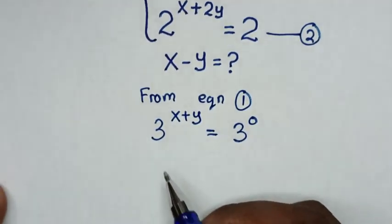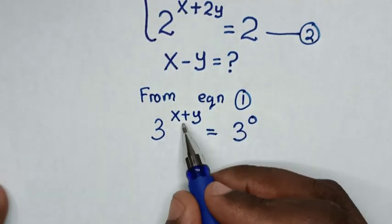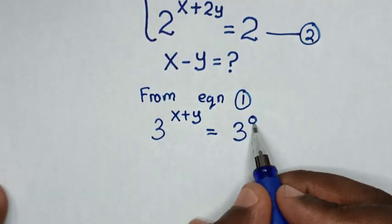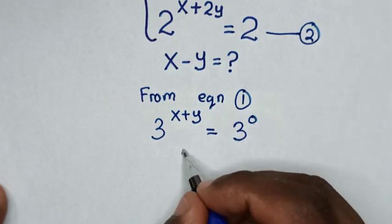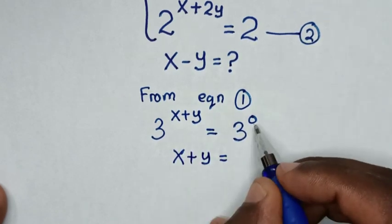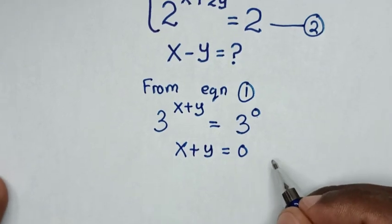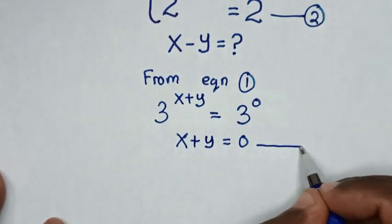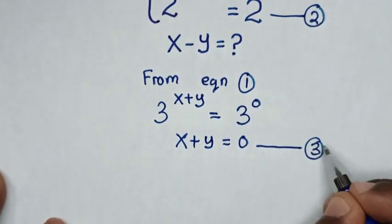Because they have the same base of 3, we compare the powers, so it will be x + y is equal to 0. We will call this Equation 3.